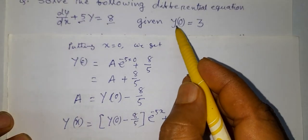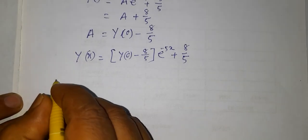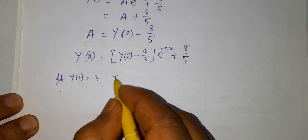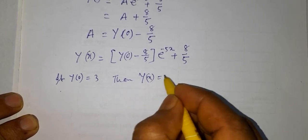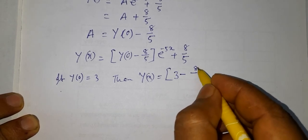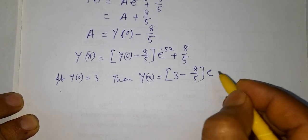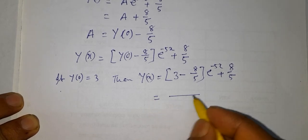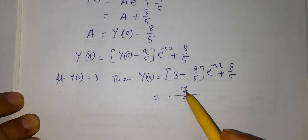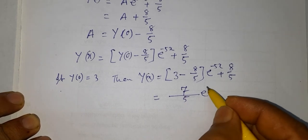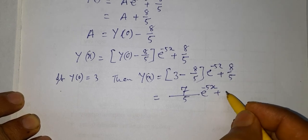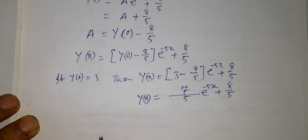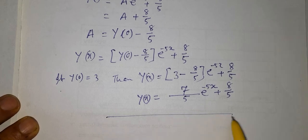Since y(0) is equal to 3, we get y(x) equal to (3 minus 8/5) times e to the power minus 5x plus 8/5. This simplifies to (7/5) times e to the power minus 5x plus 8/5. This is the solution of the differential equation.